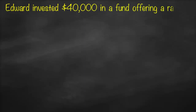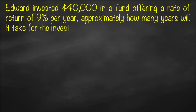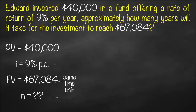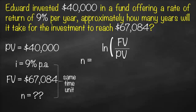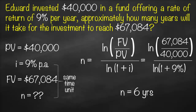Edward invested $40,000 in a fund offering a rate of return of 9% per year. Approximately how many years will it take for the investment to reach $67,084? Variables: PV = $40,000, i = 9% per annum, FV = $67,084. Since interest is per annum, time will be in years. Using n = ln(FV/PV) / ln(1 plus i), we get ln(67,084 / 40,000) divided by ln(1 plus 9%), giving n = 6 years.